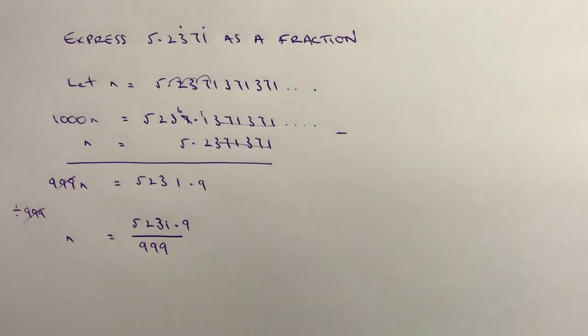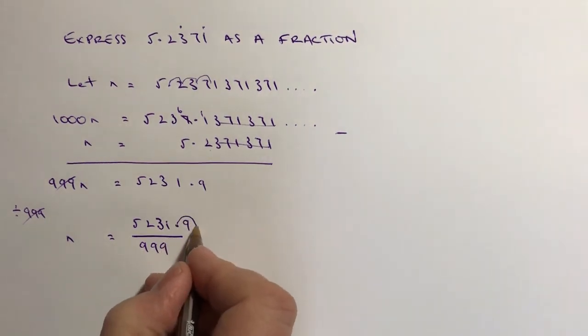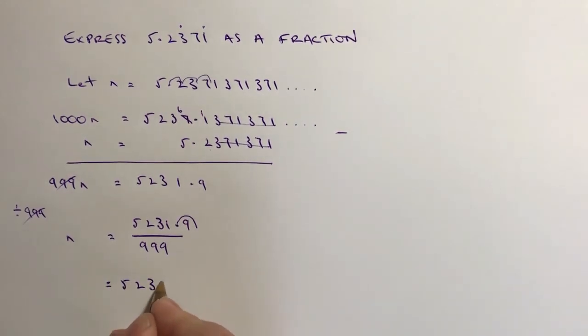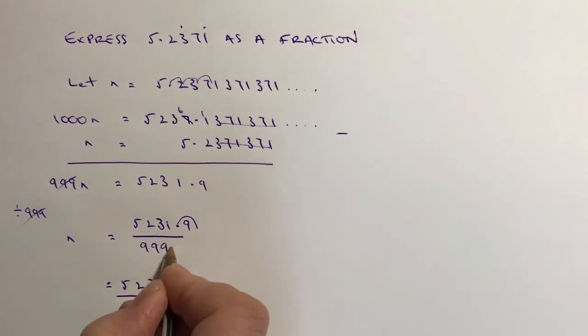Now, strictly speaking, that's not a fraction because it involves this decimal point. So what I'm going to do is move the decimal point one place over. And that means the top number becomes 52319 and the bottom number becomes 9990.